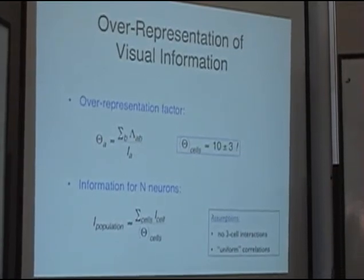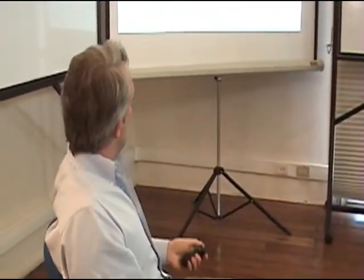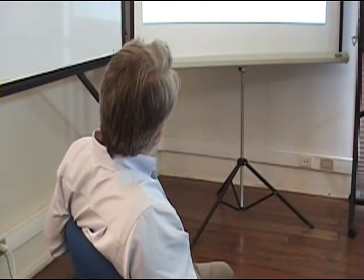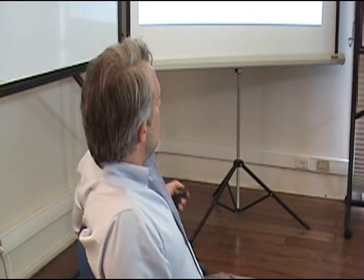This isn't a measurement of redundancy in the entire population — that calculation is very hard. But under some very simple assumptions, like uniform correlations, you can connect this to the population information, and if those assumptions are true, then information in the population is the sum of all the cells divided by this over-representation factor. So roughly speaking, it's reasonable to think that the population redundancy is roughly a factor of ten.